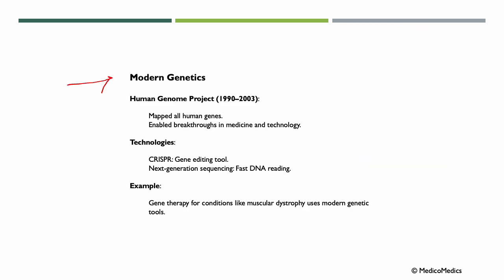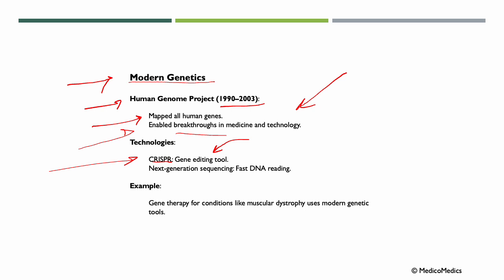Moving into modern genetics, we've had the Human Genome Project, from 1990 to 2003, where we mapped all human genes. Similar to creating a GPS for the human body, it helps us develop better treatments for diseases and enabled breakthroughs in medicine and technology. Some of these technologies include CRISPR, a gene editing tool. For example, gene therapy is used for conditions like muscular dystrophy, and it is becoming increasingly popular.